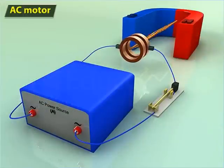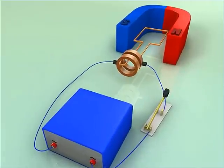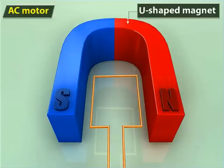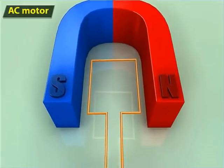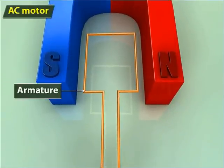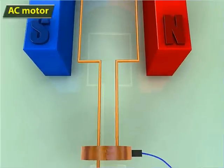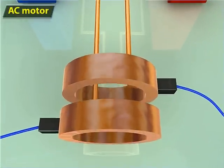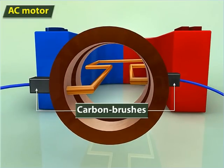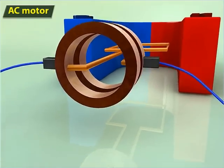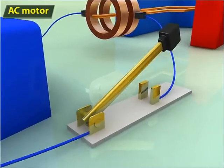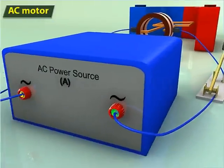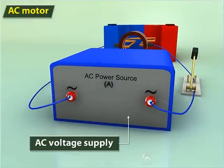Let us learn about an AC motor. An AC motor consists of a U-shaped magnet, an armature, slip rings, carbon brushes, a key, and an AC voltage supply.